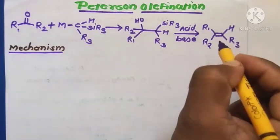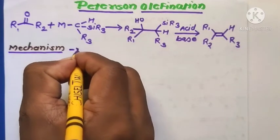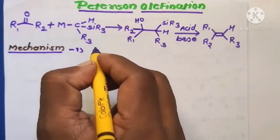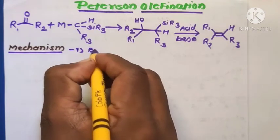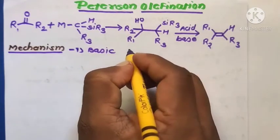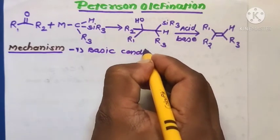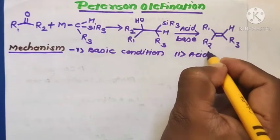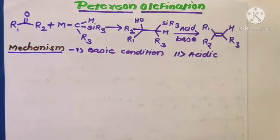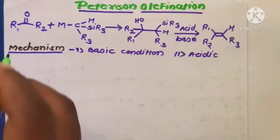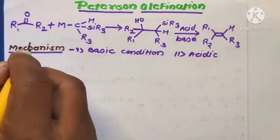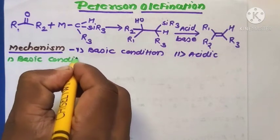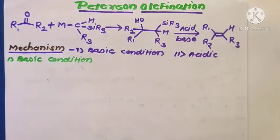In the reaction mechanism, there are two pathways we can use for the formation of alkene molecules. The first pathway proceeds under basic conditions, and the second pathway proceeds under acidic conditions.